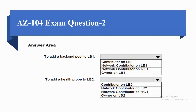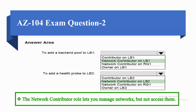These are the answer areas. To add a backend pool to LB1, the correct answer is Network Contributor on LB1. To add a health probe to LB2, the correct answer is Network Contributor on LB2. This is because the Network Contributor role lets you manage the network but not the access.